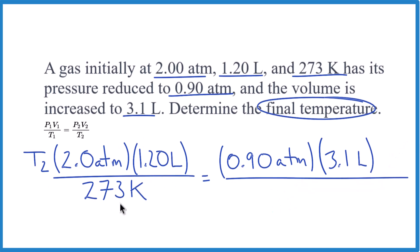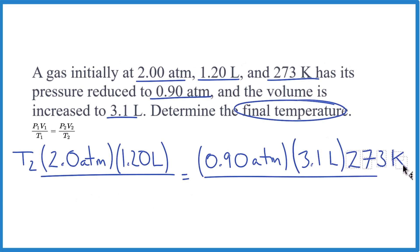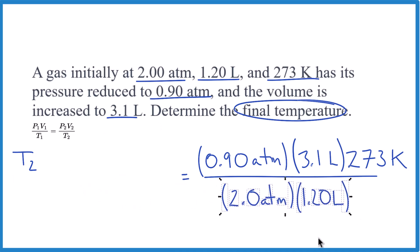Now I could multiply both sides by 273 Kelvin - that would cancel it out over here and have it up top on this side. Then I could divide both sides by this here, which would cancel it out on this side. And over here, now I'd have T2 all by itself.